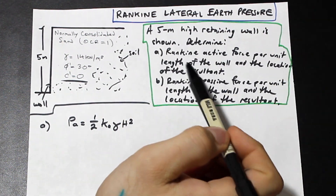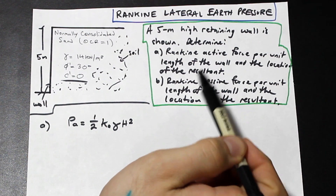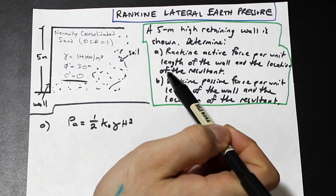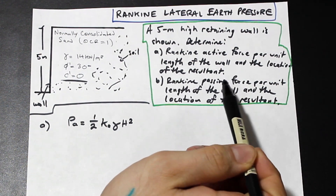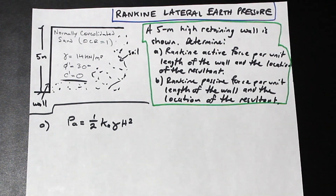So we have a five-meter retaining wall, and we're asked to determine Rankine's active force per unit length and Rankine's passive force per unit length of the wall, and the location of the resultants.